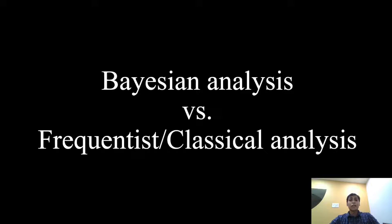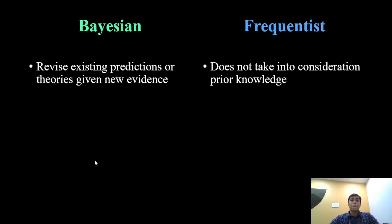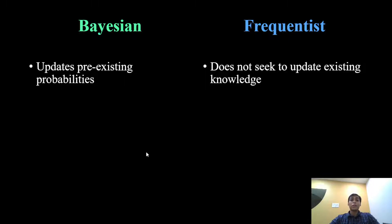Bayes' theorem provides a way to revise existing predictions or theories when given new evidence. On the other hand, frequentist analysis usually does not take into consideration prior knowledge and does not seek to update existing knowledge. That is to say, Bayes' theorem updates pre-existing probabilities.